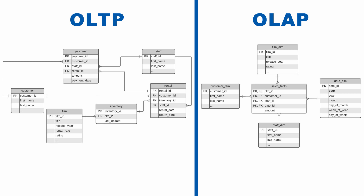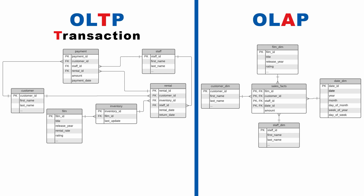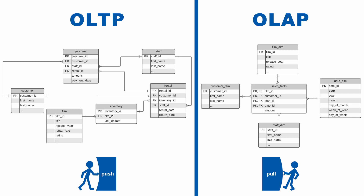The OL and P in both acronyms stand for Online Processing. The T stands for Transaction because OLTP databases are optimized for transaction loading and updating, and the A stands for Analytical because OLAP is used to perform analytics. So one is designed to rapidly push data in, and the other is optimized to quickly pull data out.